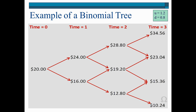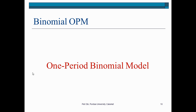In option pricing, we start from the final nodes — for example, where the stock ends up at $34.56 or $23.04 — and determine the intrinsic value of the option. Then we work backwards to time 2, then to time 1, and finally to time 0, which is where we seek to determine the theoretical price of an option. A numeric example will be pursued in the next video entitled 'The One-Period Binomial Model.'